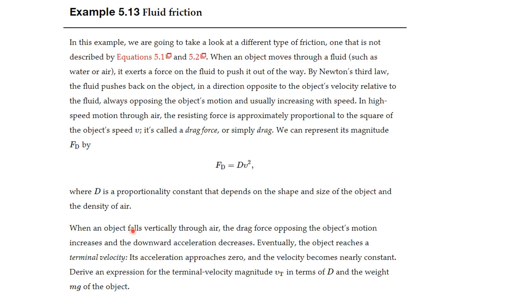When an object falls vertically through air, the drag force opposes its downward motion, so the downward acceleration decreases over time — like a skydiver. Eventually, if falling from high enough, the object reaches terminal velocity. At that point the acceleration approaches zero and the velocity becomes nearly constant. We're asked to derive an expression for terminal velocity in terms of D and the weight mg.